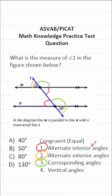Last but not least, you have to know that vertical angles are also congruent or equal. This angle and this angle, for example, share this vertex, so they are congruent as well.